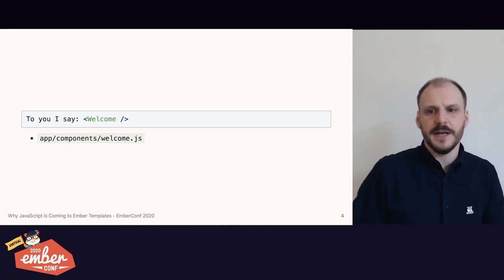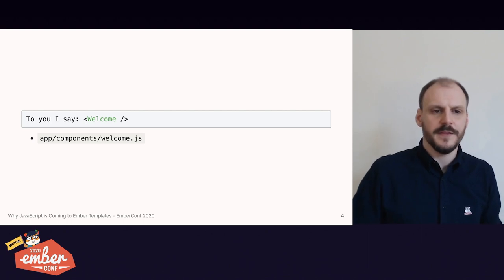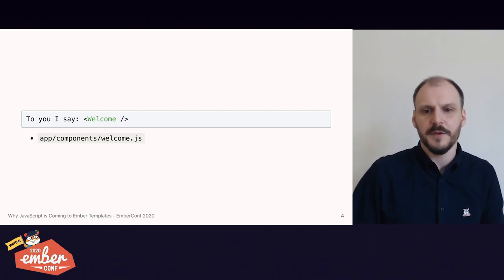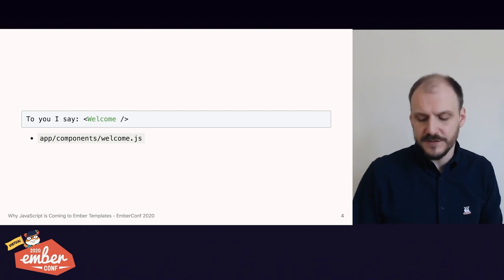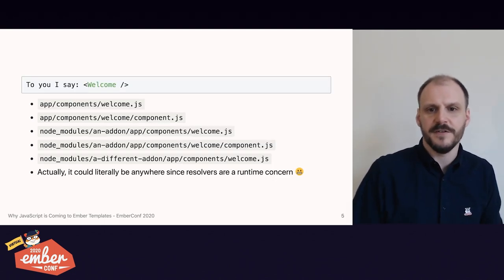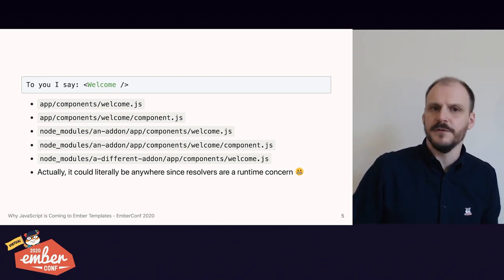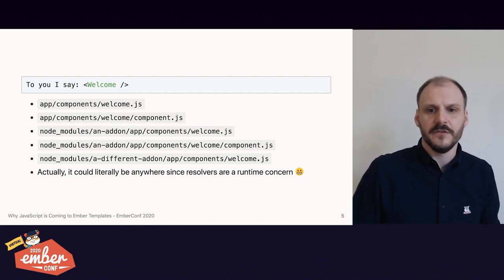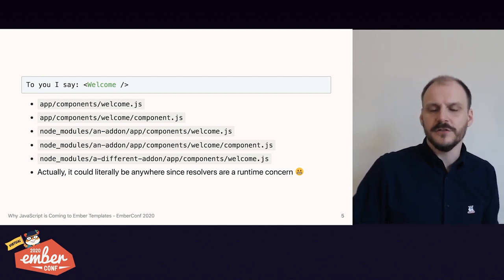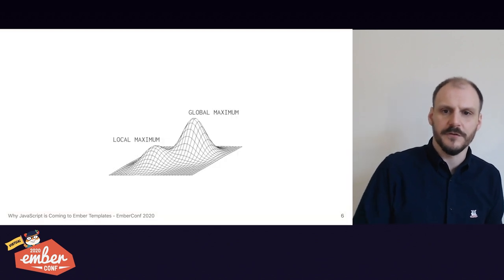Let's say we're reading a template in an application. Most Ember developers would intuit that when they look for the definition of a welcome component on disk, they'd look in app/components — and that's often the correct answer. But if you want to implement jump-to-definition, or let TypeScript find the definition of that file, you'd need to consider a much larger range of possible locations. Ember's resolver system permits components to be defined in many locations, and the logic for deciding which to use is implemented as part of your application's runtime, making it challenging to support common static analysis tools — IDEs, type systems, and bundlers.